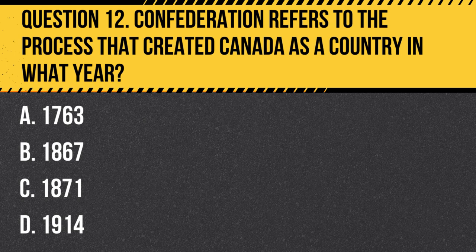Answer: B. 1867. The Confederation of Canada occurred on July 1, 1867, when three British colonies united to form the Dominion of Canada.